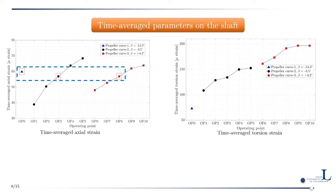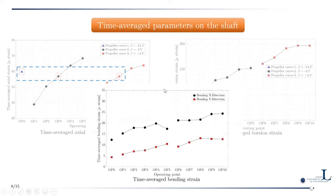Time average shaft parameters show that axial and torsion strain increase with turbine discharge for each propeller curve. Interestingly, axial strain at on-cam operating points (highlighted by red dashed boxes) is rather constant despite different guide vane openings and runner blade pitch angles. Bending strain in both X and Y directions generally increases with guide vane opening.